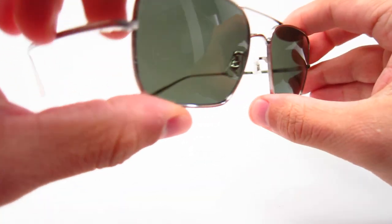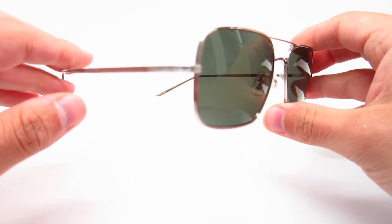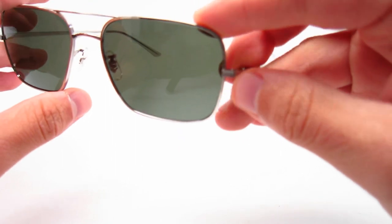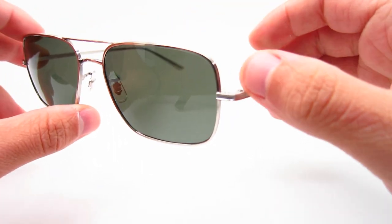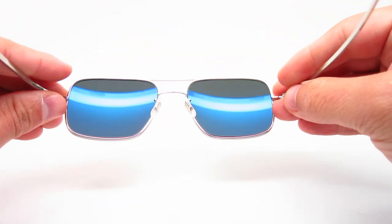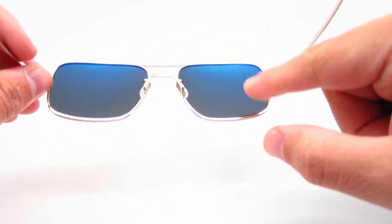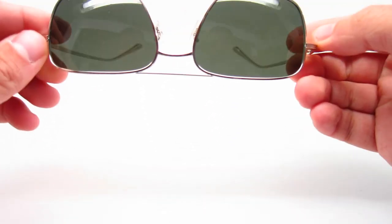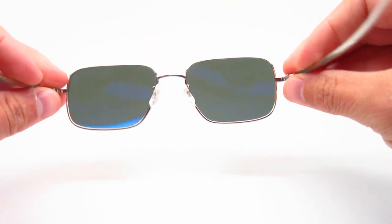This particular color is the 5036P1 color, which is the silver frame with the G15 polarized lenses. From the back of it, I see blue. So I think that's the AR coating on the back side. You don't see it on the front, but you see it on the back.